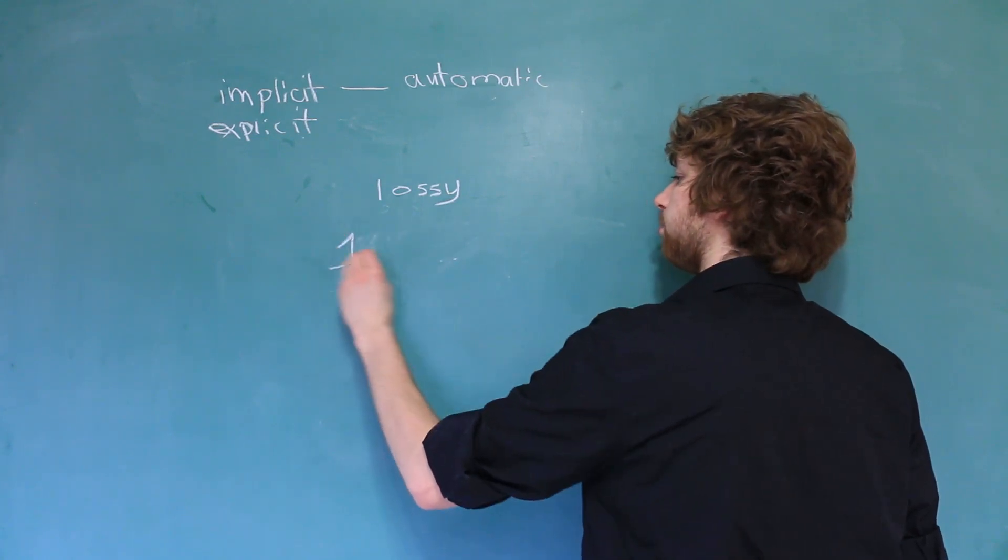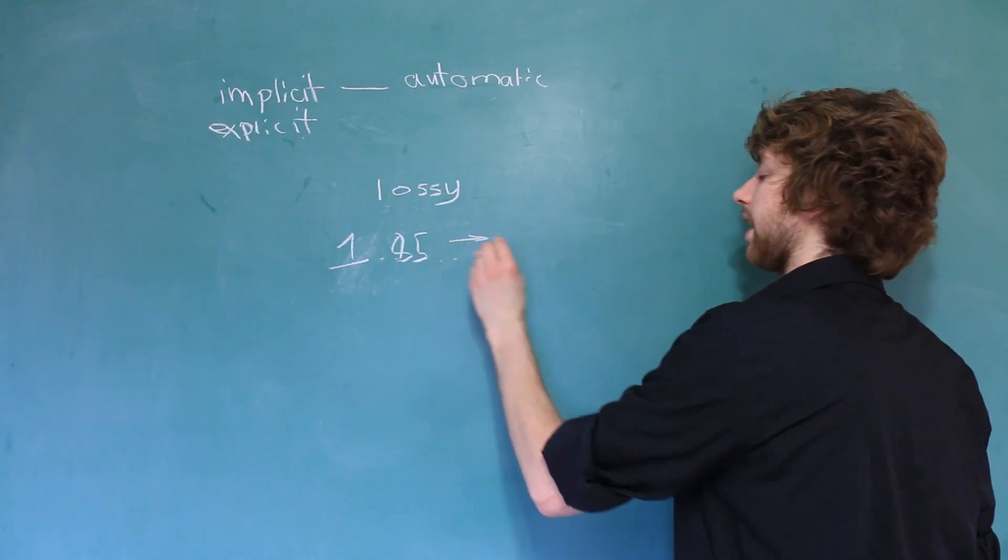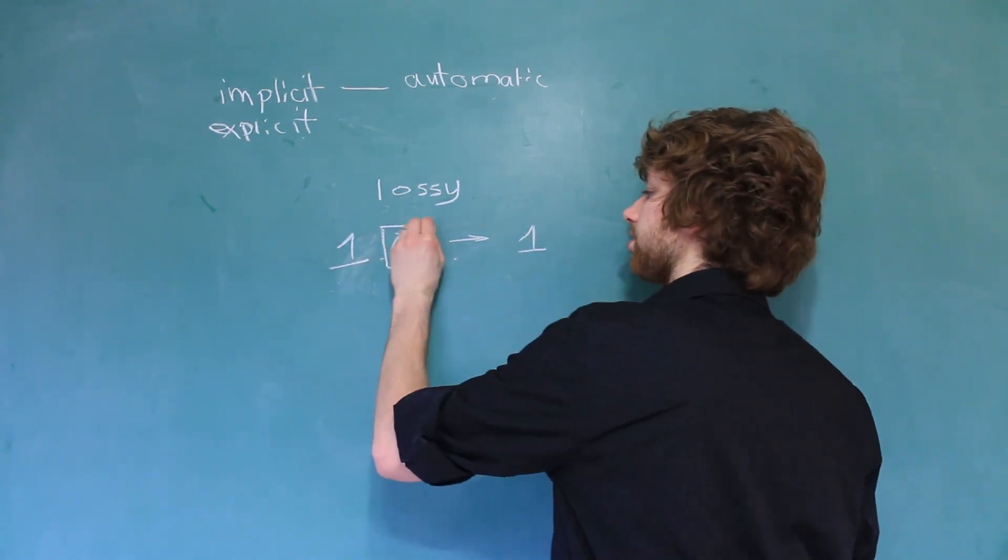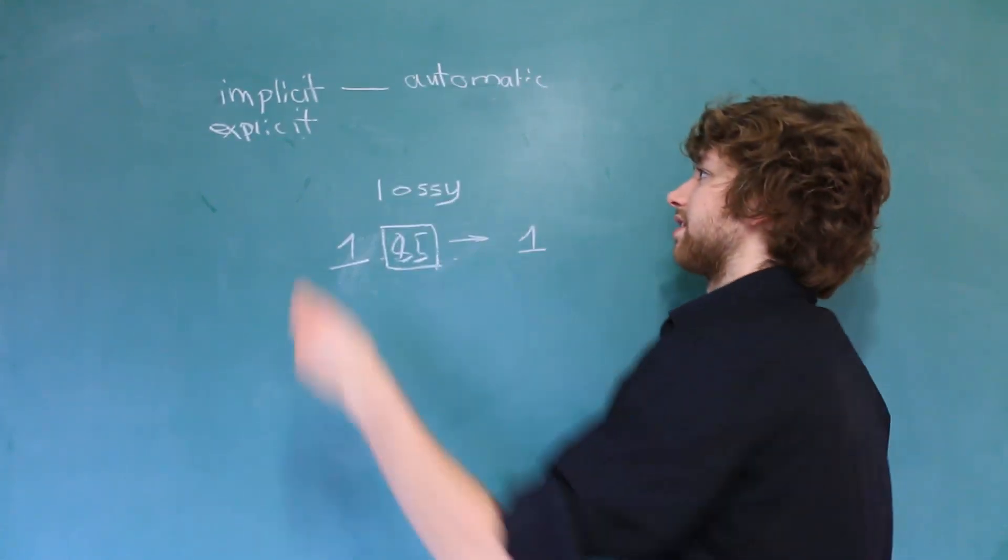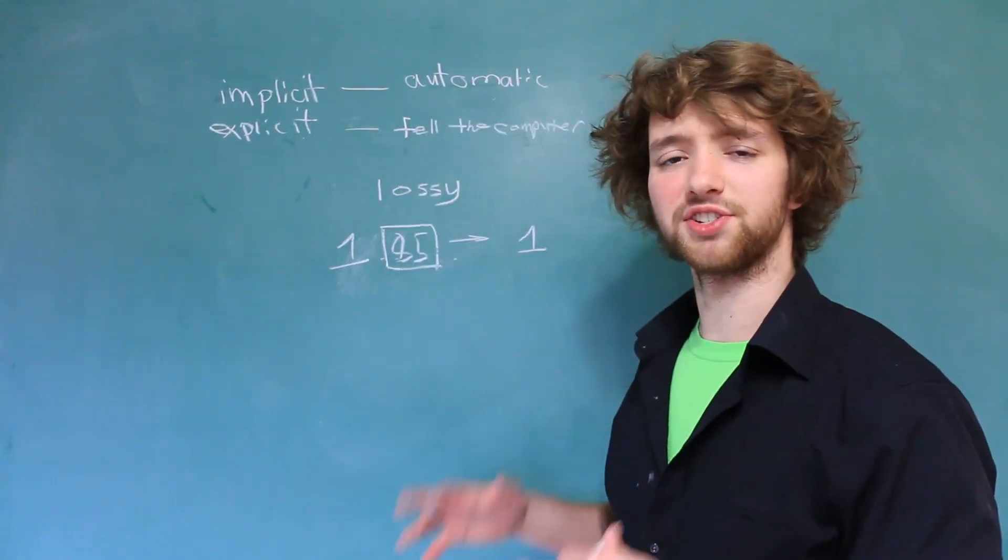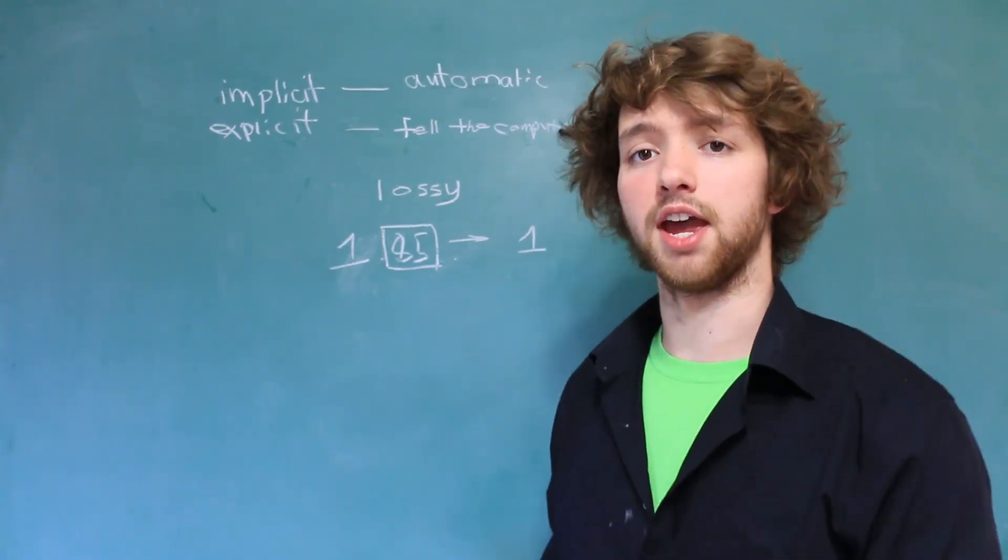You can imagine starting with a double of 1.85 for example and typecasting that to an integer of just one and you can see you've actually lost some data. That's why it's explicit. You have to tell the computer, the computer doesn't just assume what you want to delete. You have to be very specific and say hey, I wanted to typecast this value to an integer. It doesn't happen automatically.